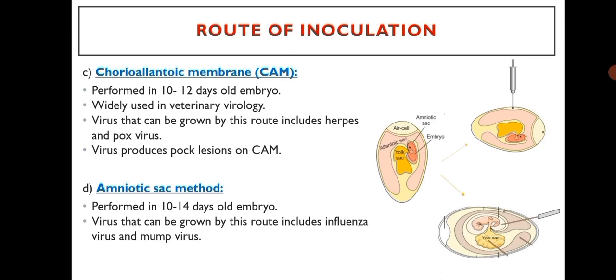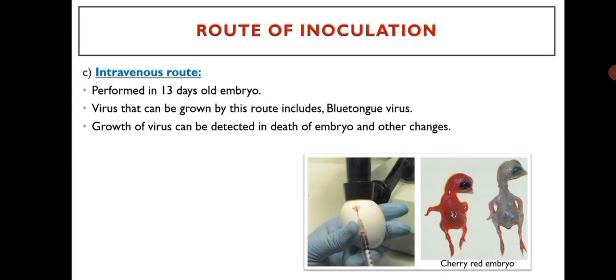The chorioallantoic membrane method is performed in 10 to 12 days old embryo and is widely used in veterinary virology. Viruses that can be grown by this route include herpes and pox viruses; the virus produces pox lesions on the chorioallantoic membrane. The amniotic sac method is performed in 10 to 14 days old embryo and viruses grown here include influenza virus and mumps virus. The intravenous route is performed in a 13 days old embryo; viruses grown by this route include bluetongue virus, and growth can be detected by death of the embryo and other changes.